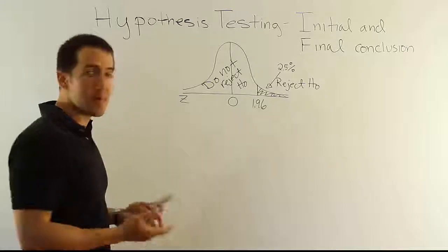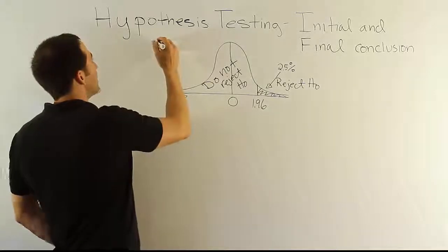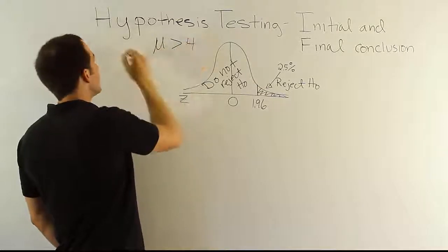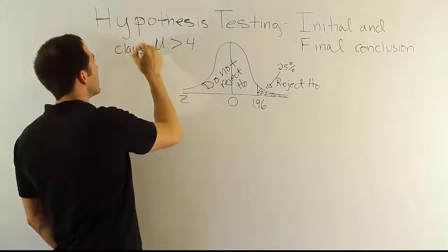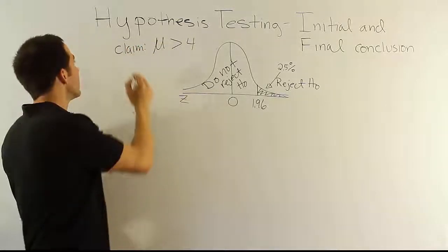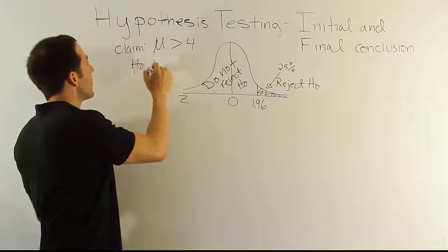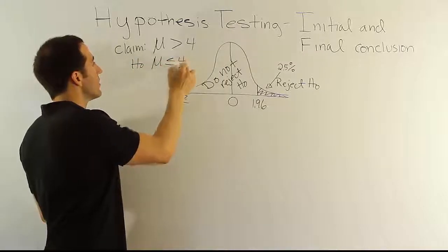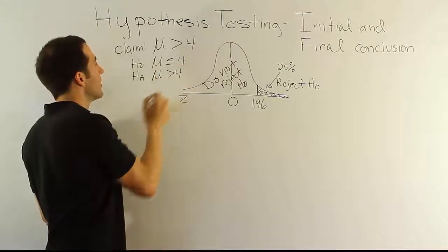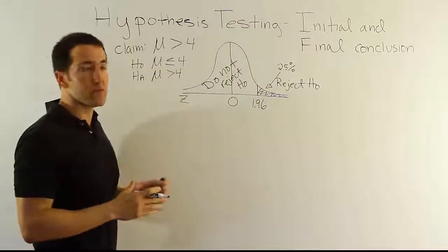We had a pair of hypotheses, right? We had basically a claim that said the mean was greater than 4. Now, the mean time to complete a bachelor's degree was greater than 4. We had an H0 that the mean was less than or equal to 4, and we had an HA which is that the mean was greater than 4. So we had those three pieces.